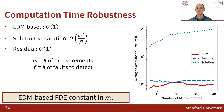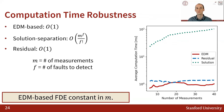Here, we use the larger, noisier Android dataset to compare how the number of measurements in the epoch affects the average computation time of each FDE method. All methods in this graph are using a single fault hypothesis. Both EDM-based and residual-based FDE scale better with increases in the number of measurements than solution separation. Additionally, in absolute terms, EDM-based FDE outperforms both methods in terms of computation time.